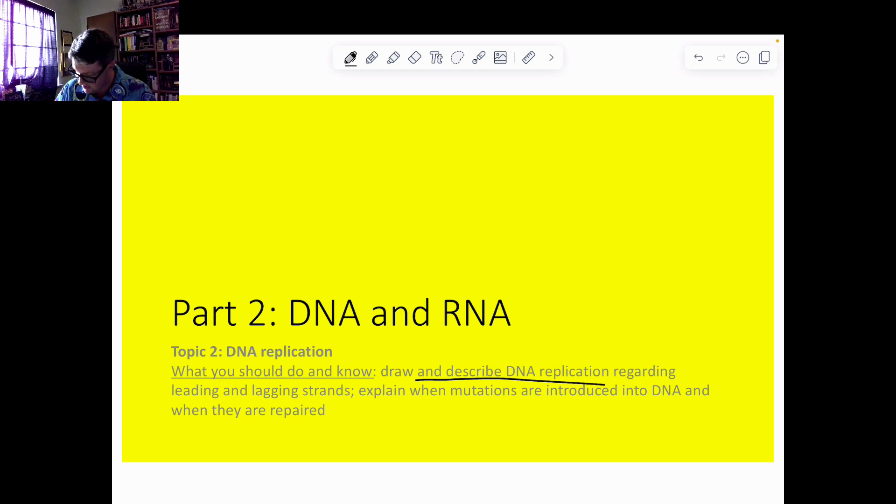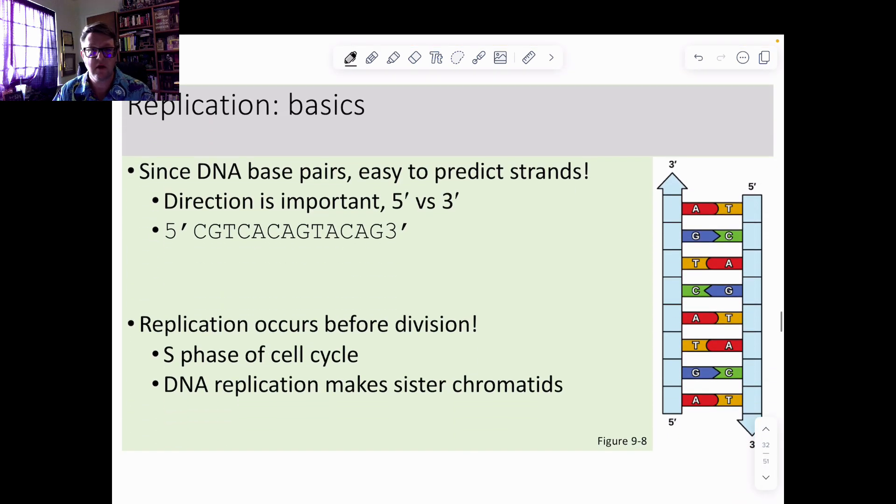Tell me where mutations are introduced and how we can fix those. The basics: since we know that DNA is paired A with T, C with G, if I know one side I can automatically tell you what the other side is, which is pretty straightforward.